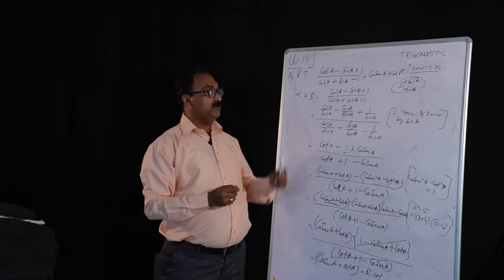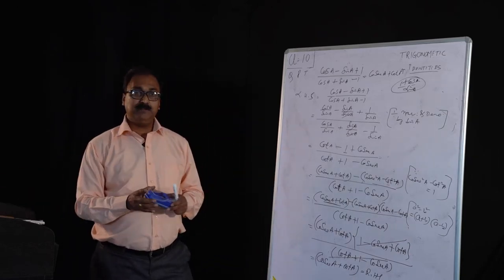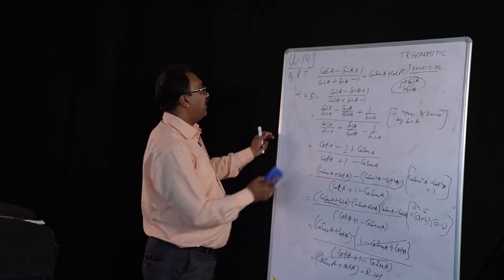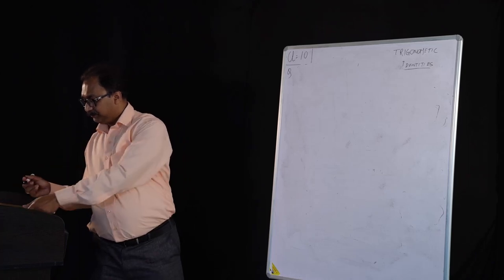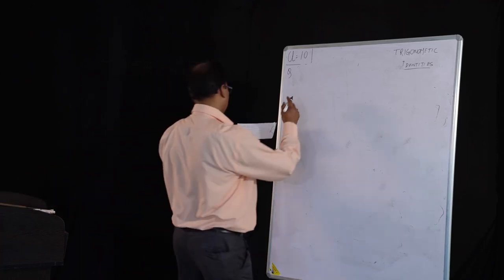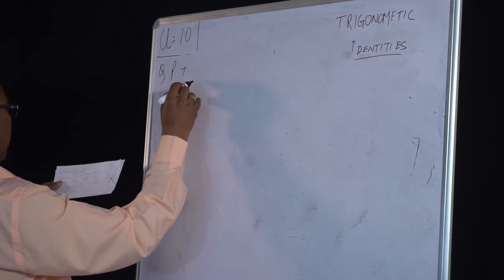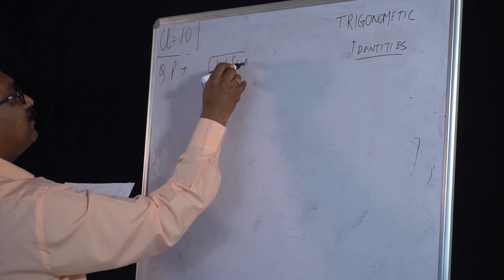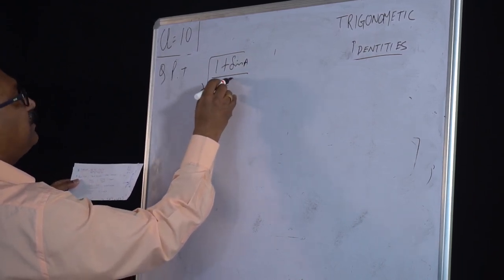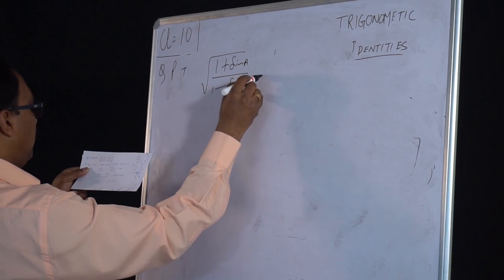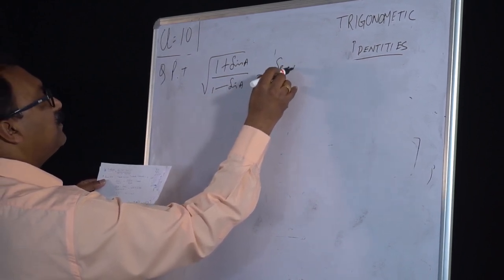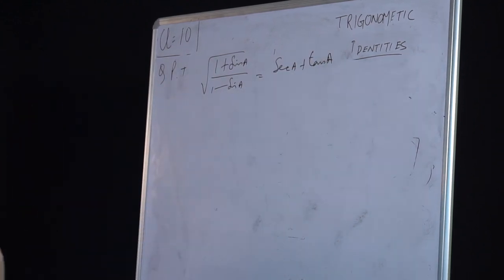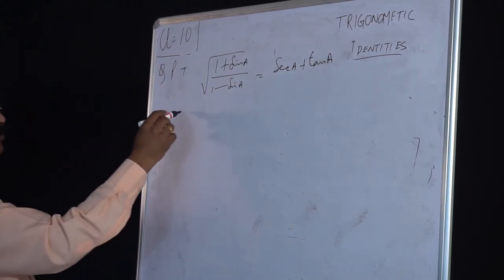One more question I have to solve — a really crucial one. Please write: prove that root of (1 plus sin A) by (1 minus sin A) equals sec A plus tan A. This involves square roots. Take left hand side: root of (1 plus sin A) by (1 minus sin A).